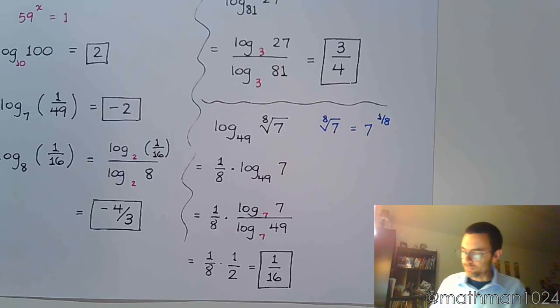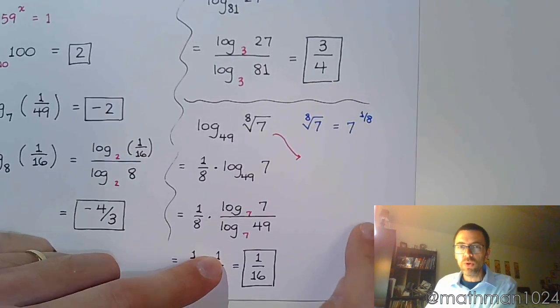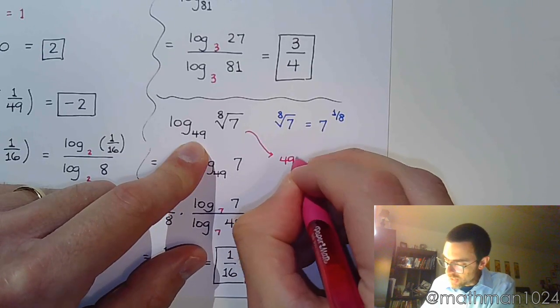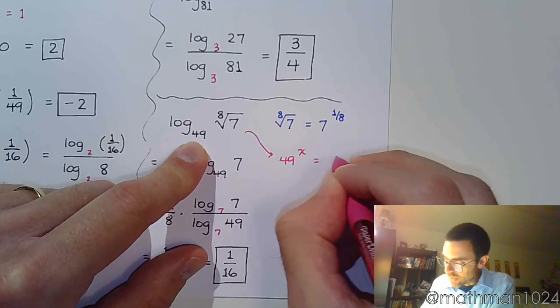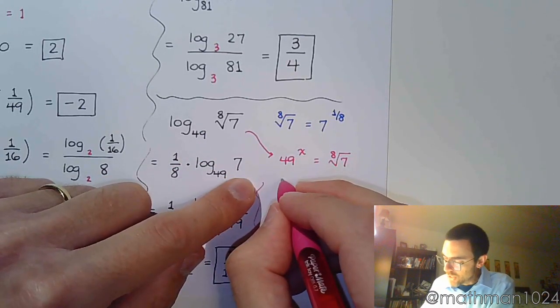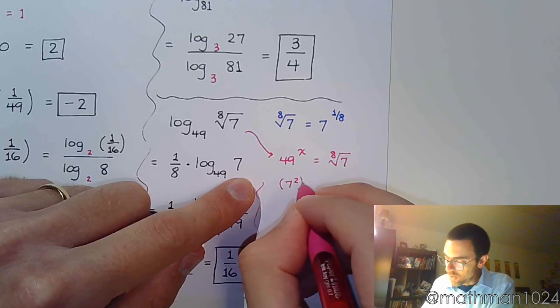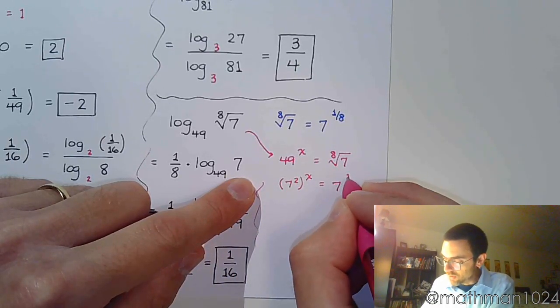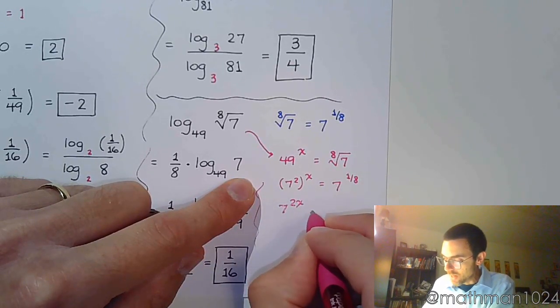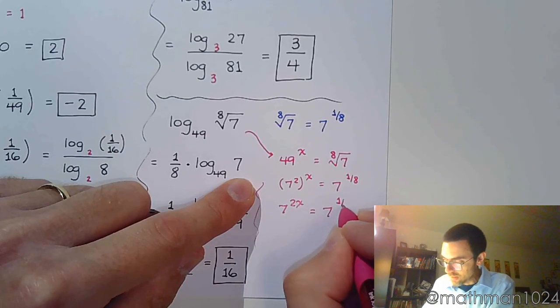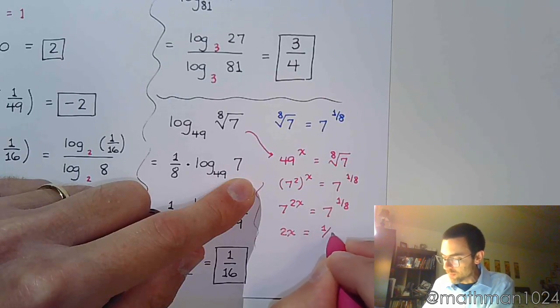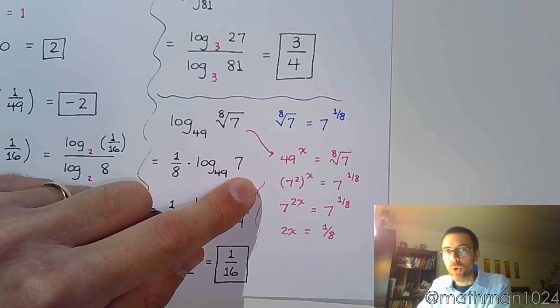Now, I do want you to know that you also could have turned this into an exponential equation. You could have said 49 to the x is equal to the 8th root of 7. In which case, you would have said this is 7 squared to the x. This is 7 to the 1/8th power. So, 7 to the 2x equals 7 to the 1/8th. And, then this is just an equation that you are solving now. Because, you get those guys that have the same base. You equate the powers.